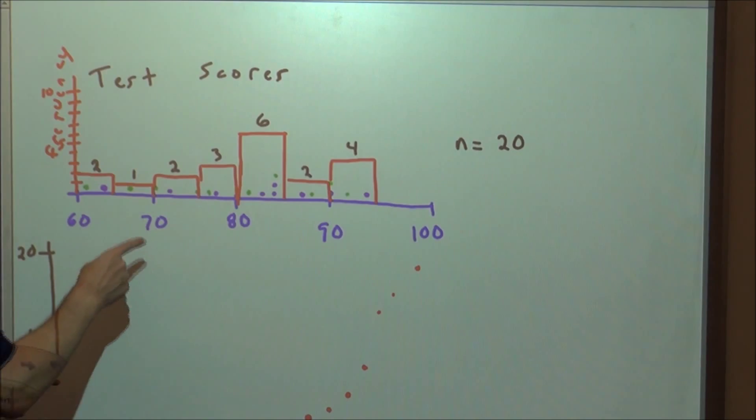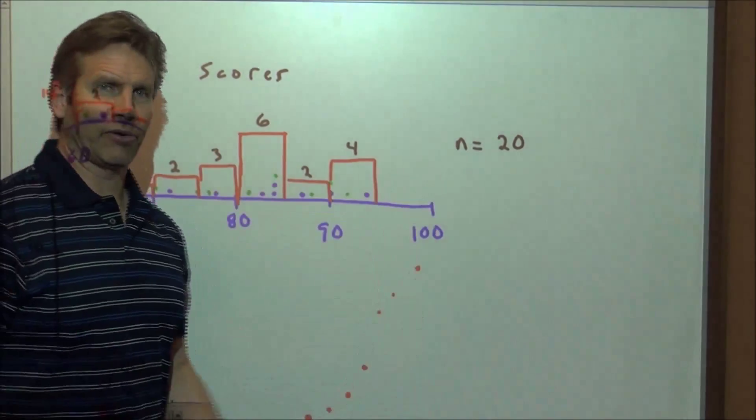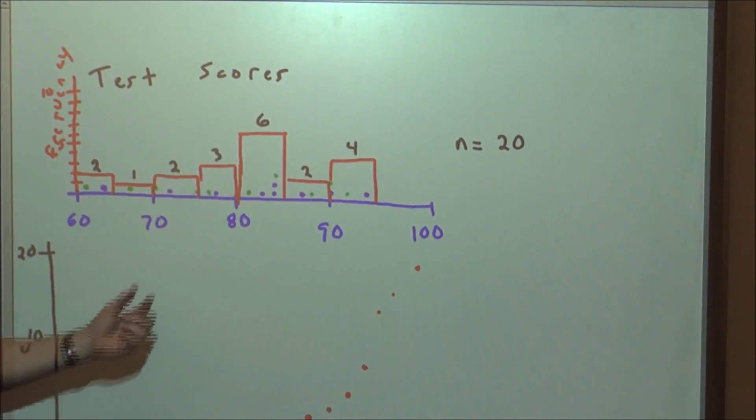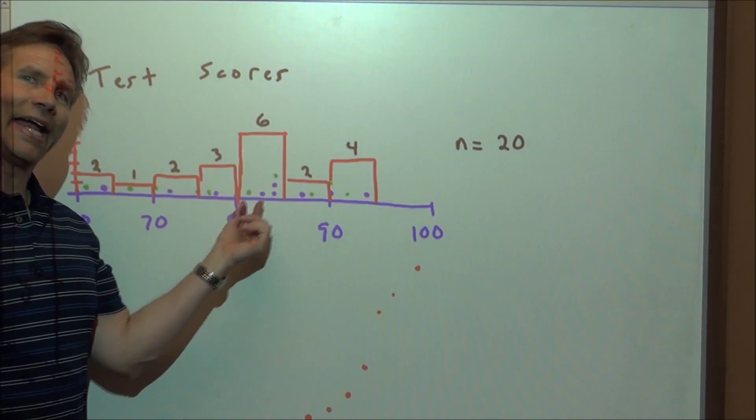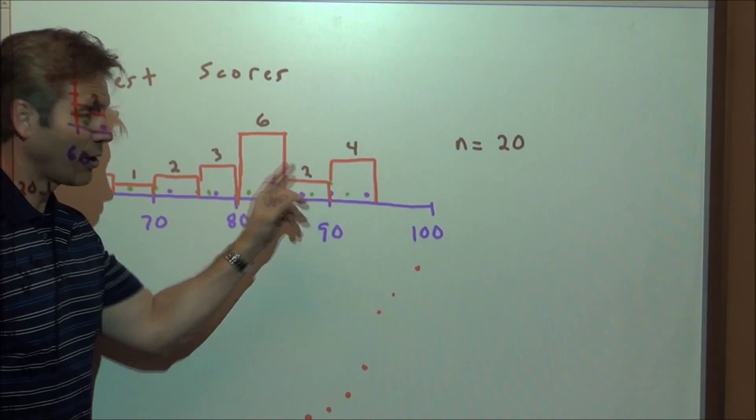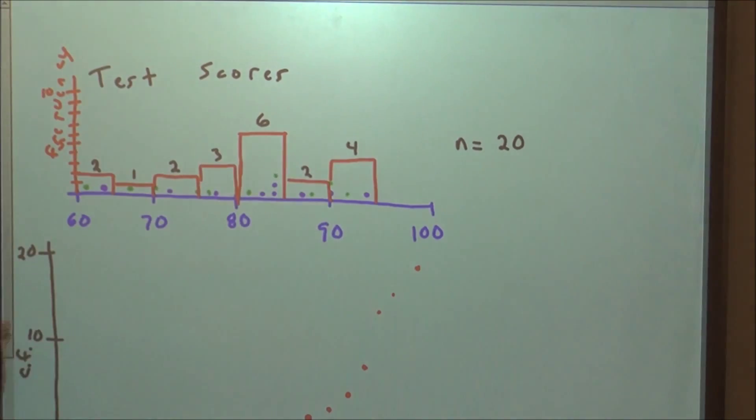For example, if we go back to this histogram that we just made, these 20 hypothetical test scores, we see that we have these different bars here. This one's six units high, meaning there's six scores between 80 and 84. Remember, a score of 85 starts here and goes through 89. So we have all these different frequencies.